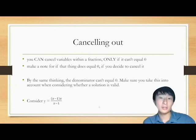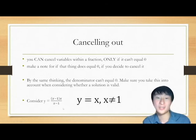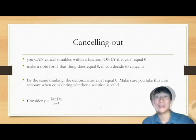By the same thinking, the denominator can't equal 0. Make sure you consider this when considering whether a solution is valid. For example, when you have this equation of a straight line here, you can cancel the x minus 1, you get y equals x, that's a straight line, but x minus 1 can't be 0, which means that x can't equal 1. This is a straight line with an open circle at x equals 1.